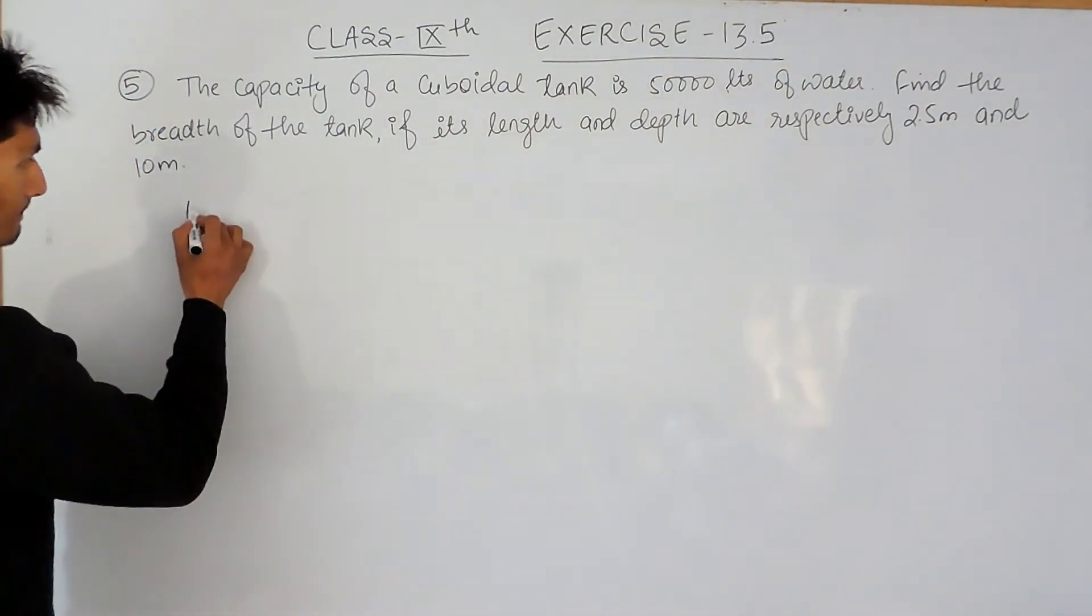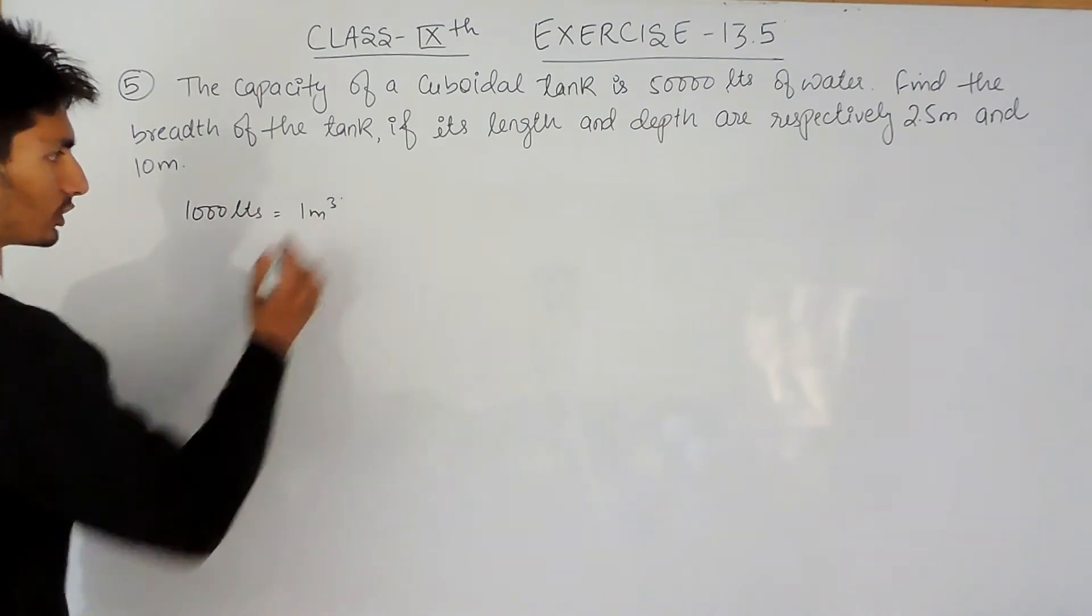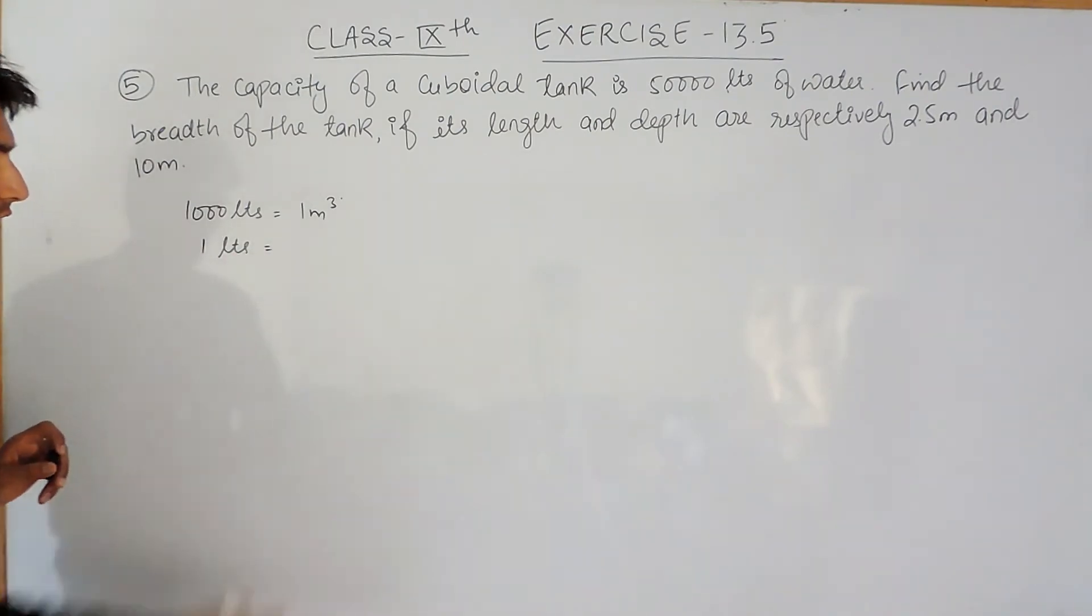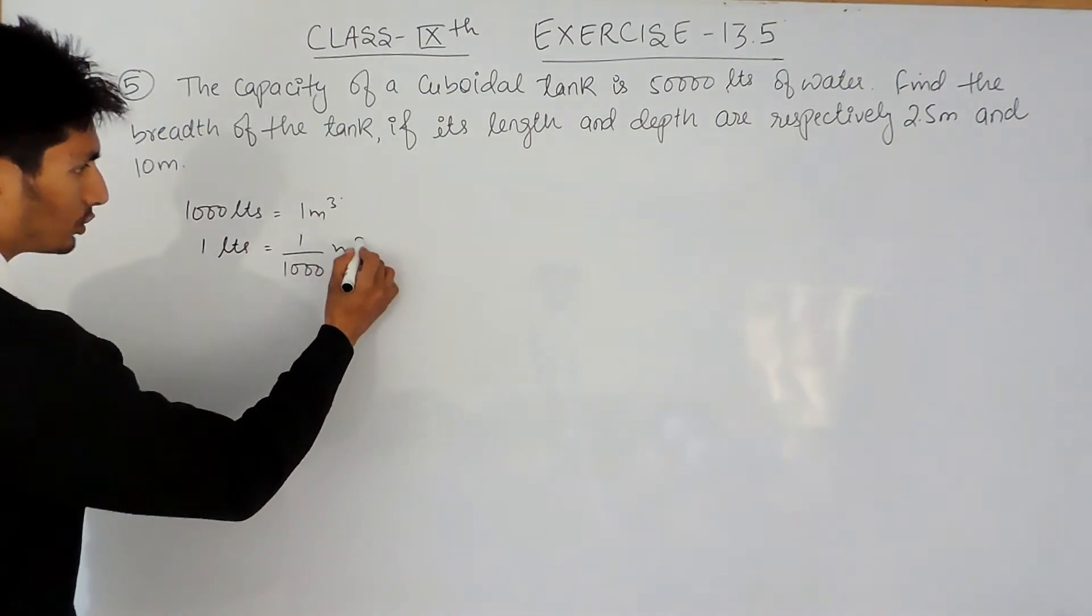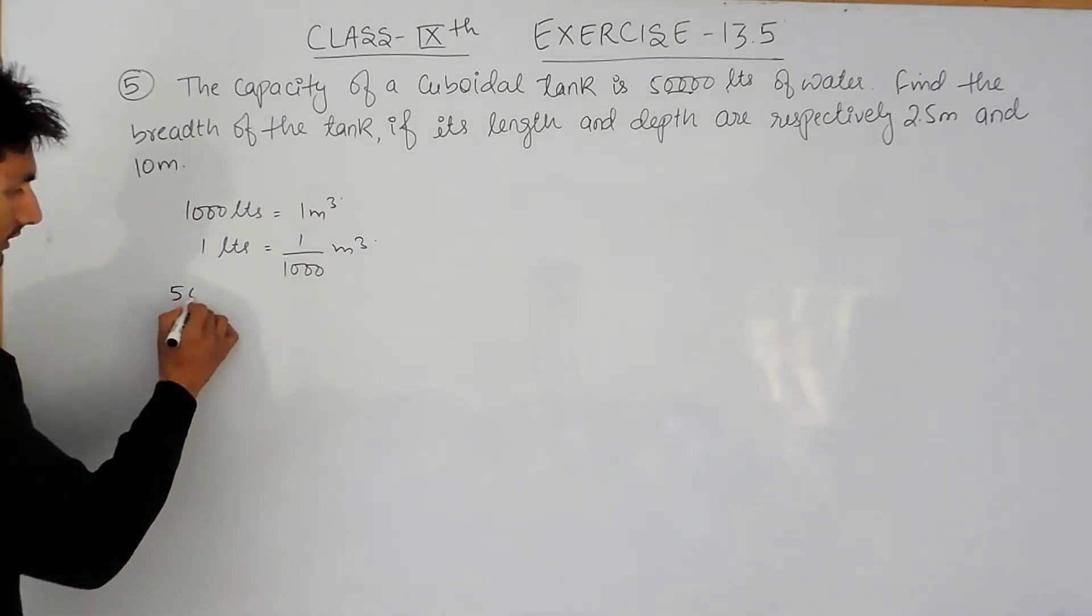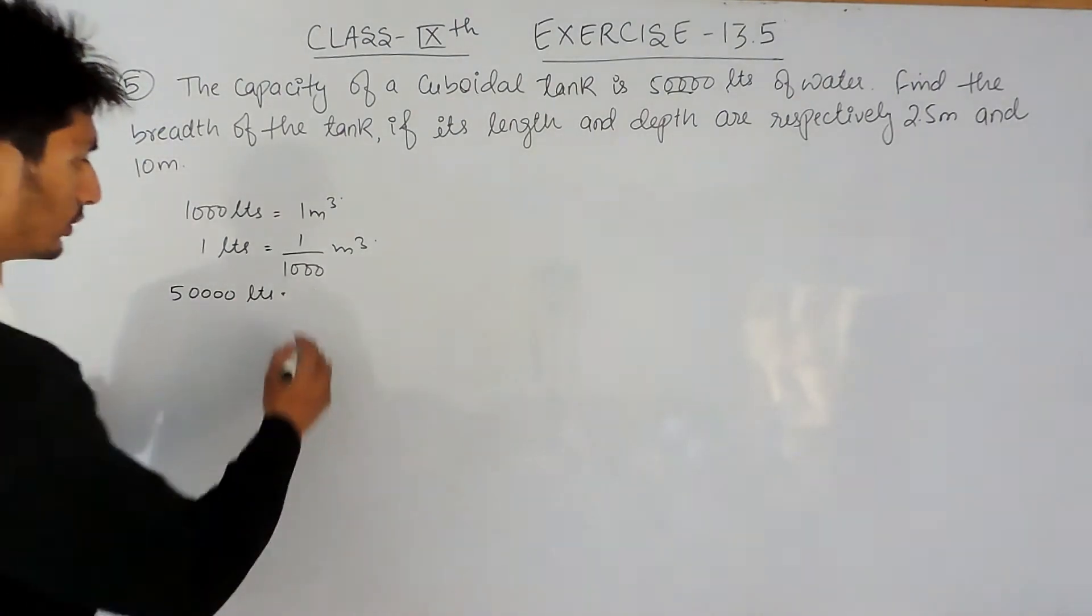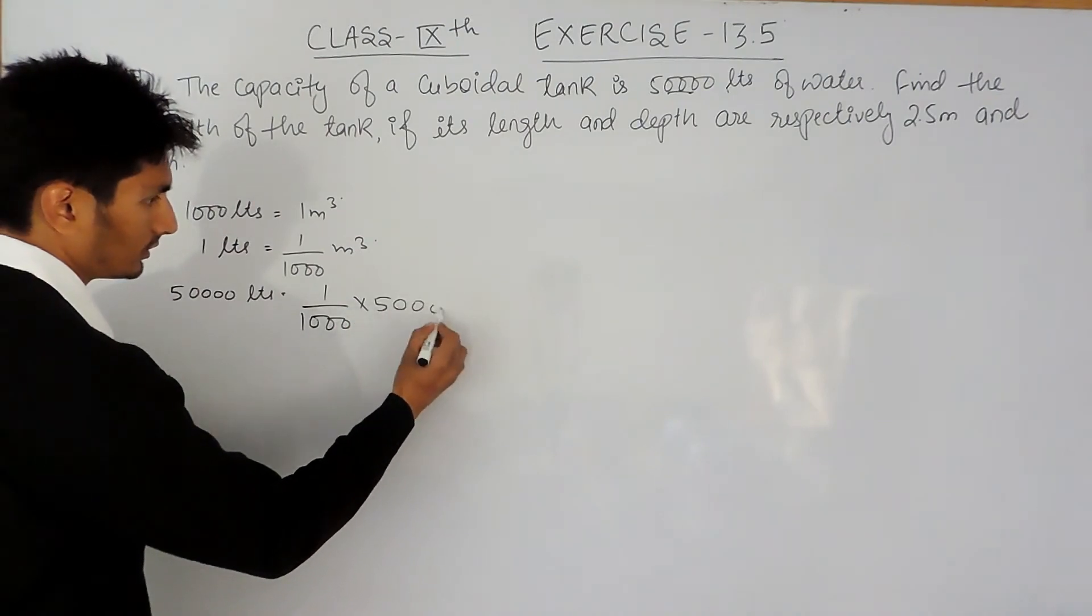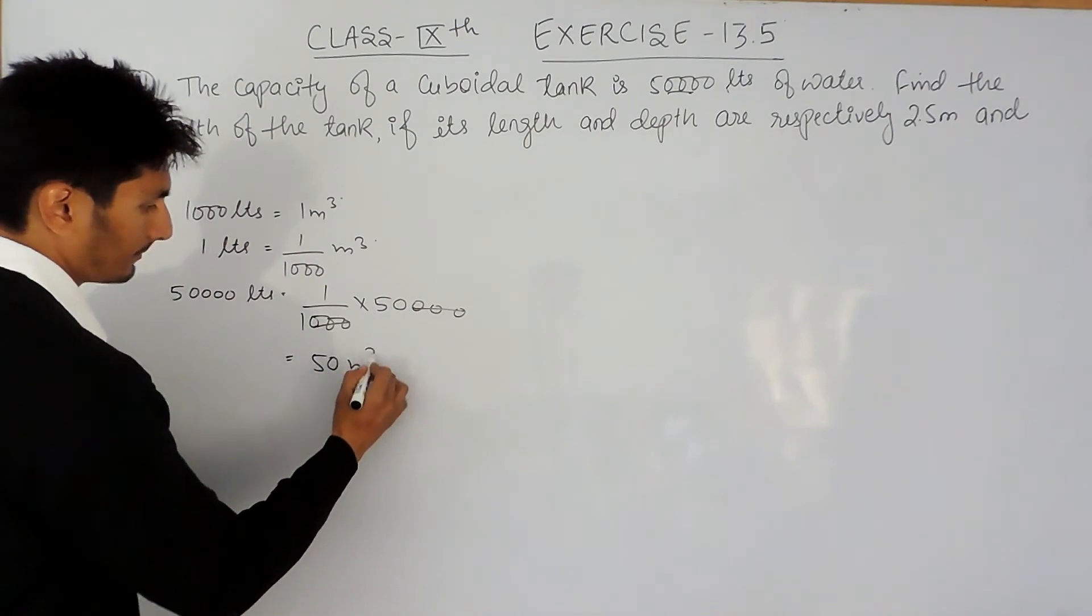We know that 1000 liters equals 1 meter cube. So 1 liter will be 1 divided by 1000 meter cube. We have to convert 50,000 liters, so 50,000 liters will be 1 upon... 3 zeros can be cancelled with 3, so it should be 50 meter cube.